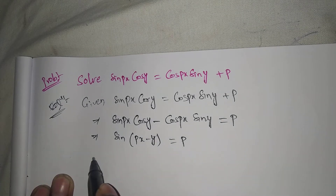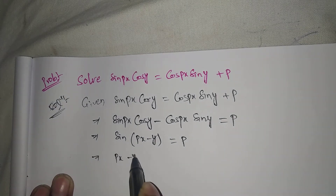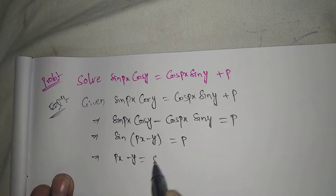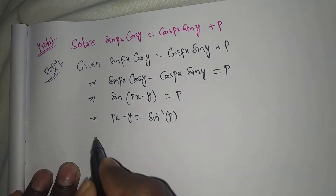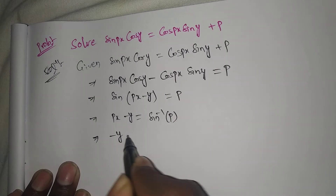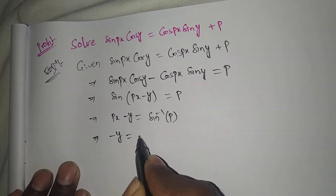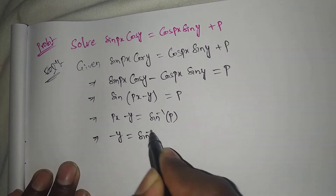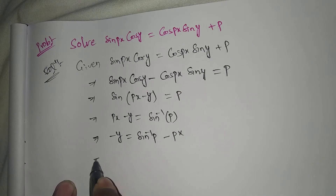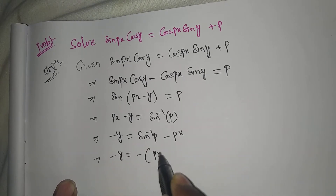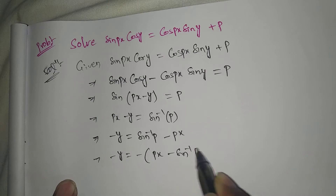Taking sin inverse inside, we get sin inverse(p). That implies px minus y = sin inverse(p), which gives minus y = sin inverse(p) minus px, and so minus y = sin inverse(p) minus px.